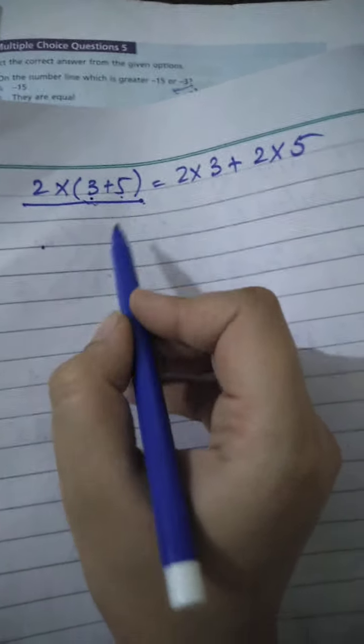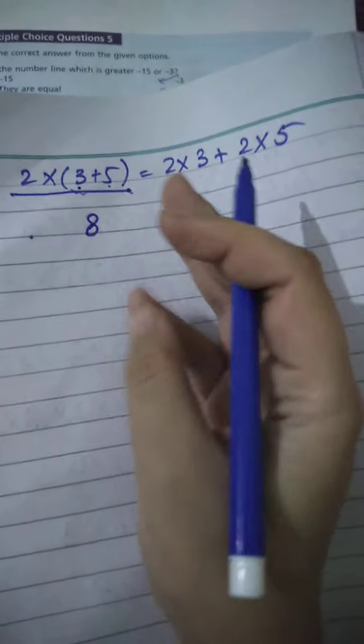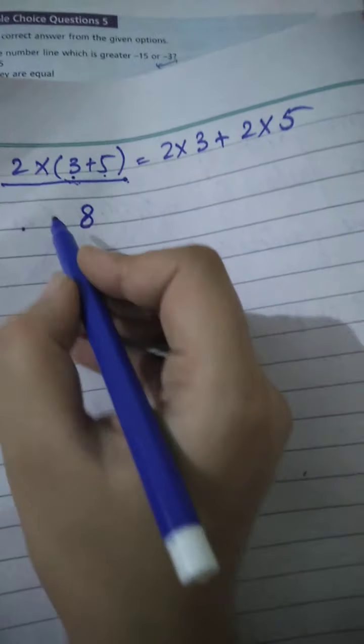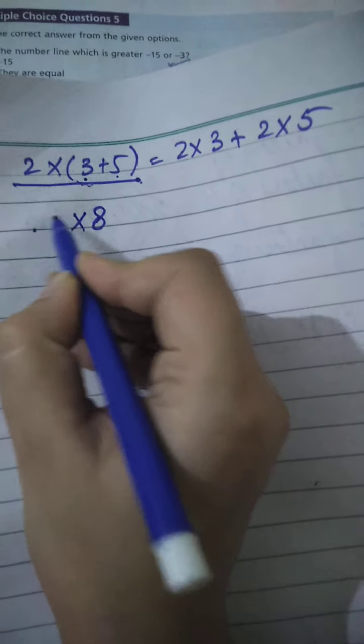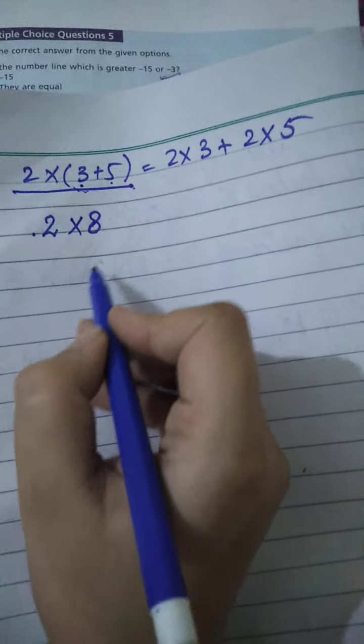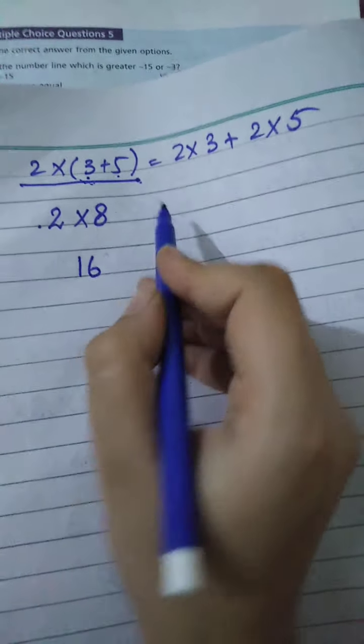Add 3 and 5 inside the bracket, you will get 8. Now multiply 8 with 2. 8 times 2 is 16. So 16 is the answer for the left hand side.